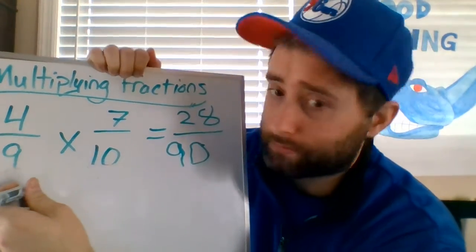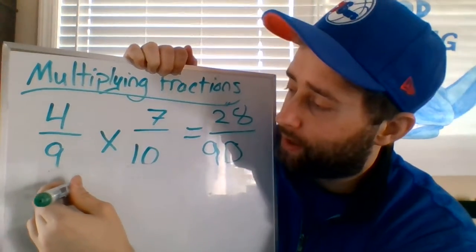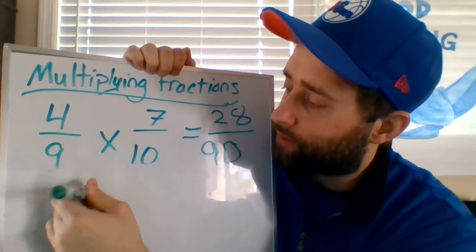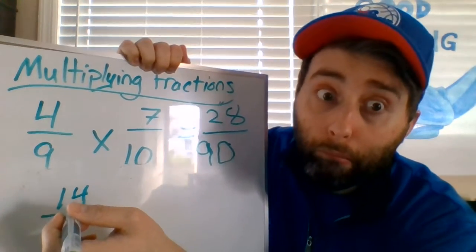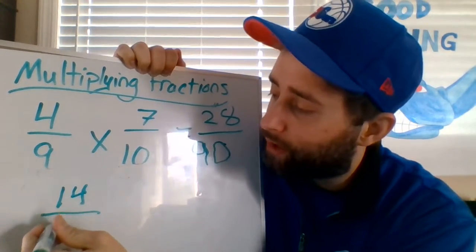So half of 28 is, let me start over here. Half of 28 is 14, because I feel like this is going to go on for a while. 14. Half of 90, yeah, 45, very good.